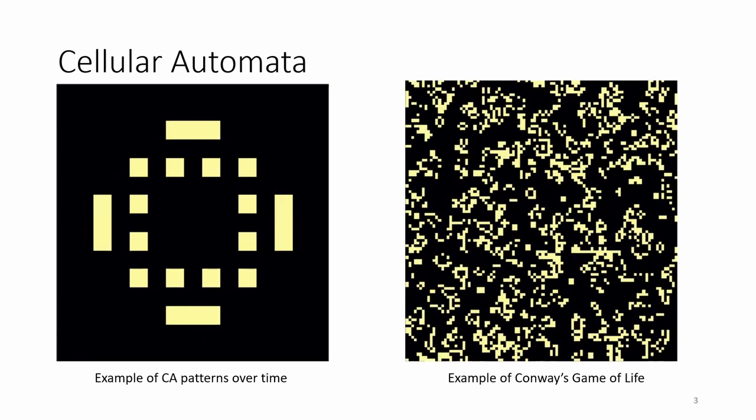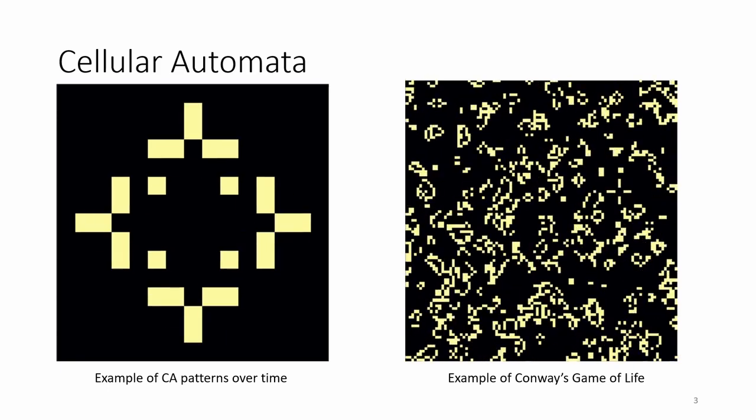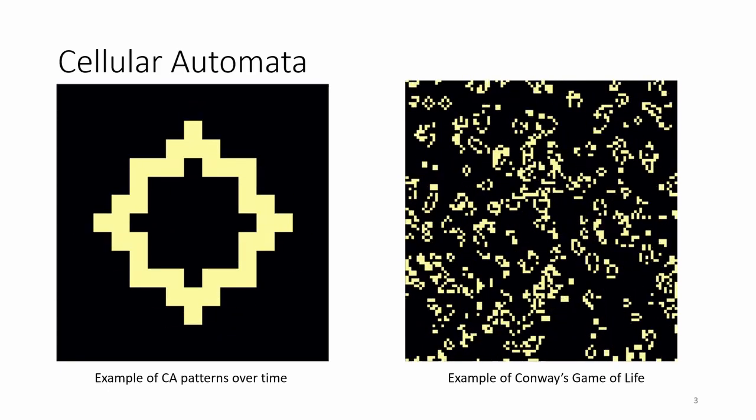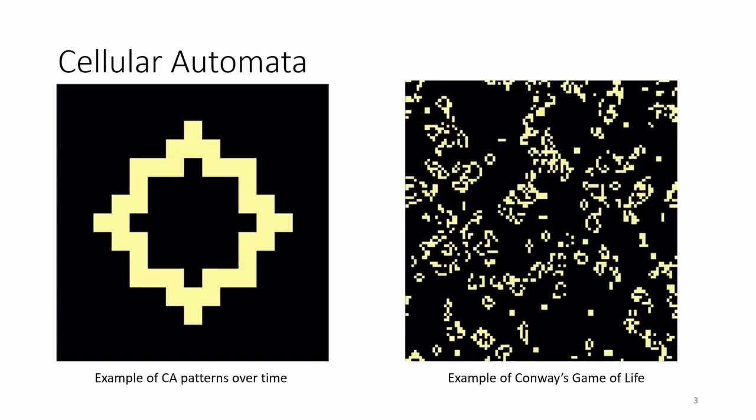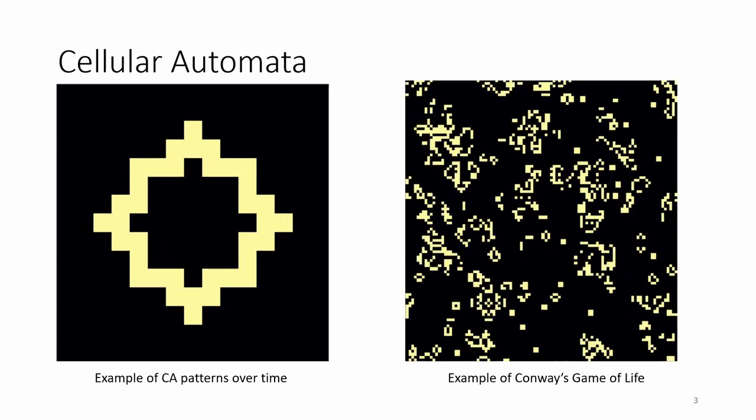Another major topic in our work is cellular automata. A cellular automaton or CA is a grid where we apply simple rules simultaneously on the system, and the state of the current cell is dependent on its neighbors.